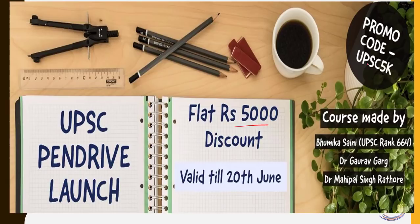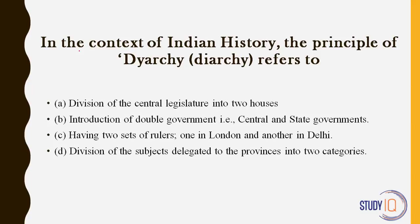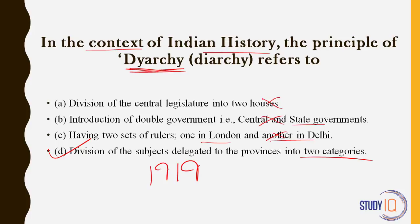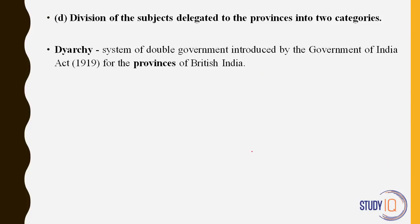Let us begin with history, art and culture. First question: in the context of Indian history, the principle of diarchy refers to — was it division of the central legislature into two houses? No, that was bicameralism. Introduction of double government, central and state? No. Having two sets of rulers, one in London and another in Delhi? No. The correct answer is: this was the division of subjects delegated to provinces into two categories. Remember the 1919 Government of India Act? It divided provincial administration into two departments — one administered by Indians and others kept by the governor using his own counsel. This is diarchy.